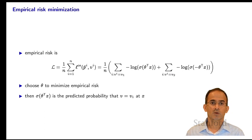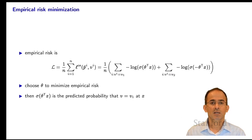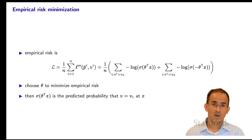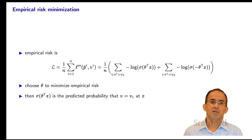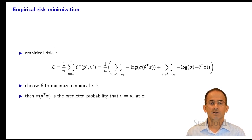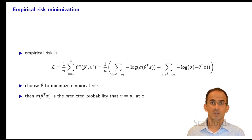This is the corresponding empirical risk minimization problem. The empirical risk is the average of the cross-entropy loss, which splits into two cases: where v_i is v1 and where v_i is v2. We choose Theta to minimize the empirical risk. Once we have Theta: y-hat is Theta-transpose x, sigma(Theta-transpose x) is the probability that v is v1 at x, and 1 - sigma(Theta-transpose x) is the probability that v is v2 at x.